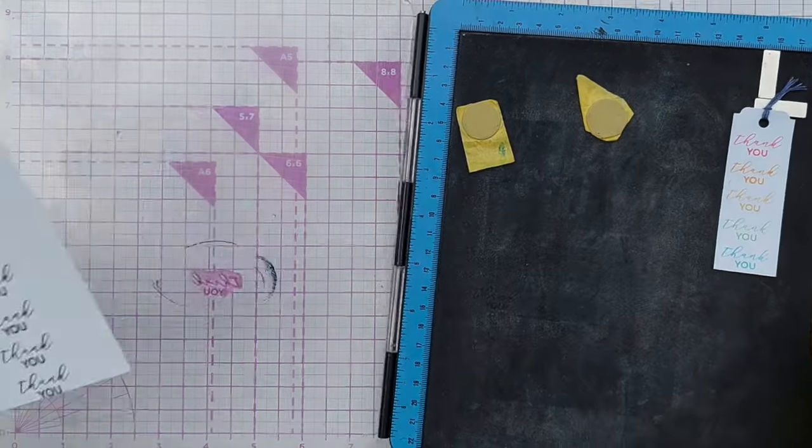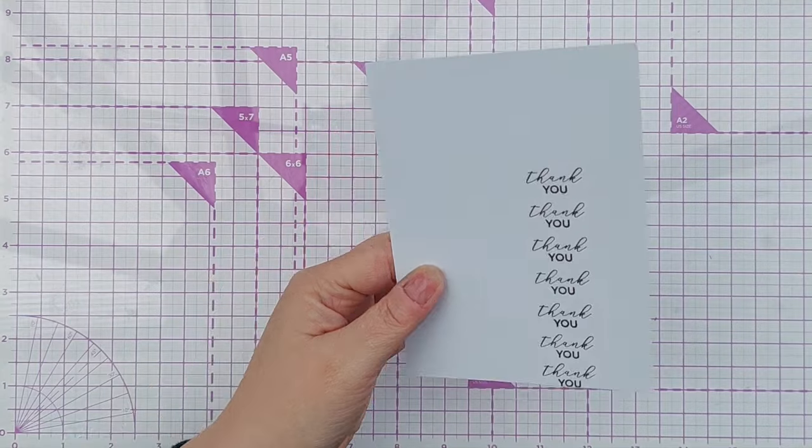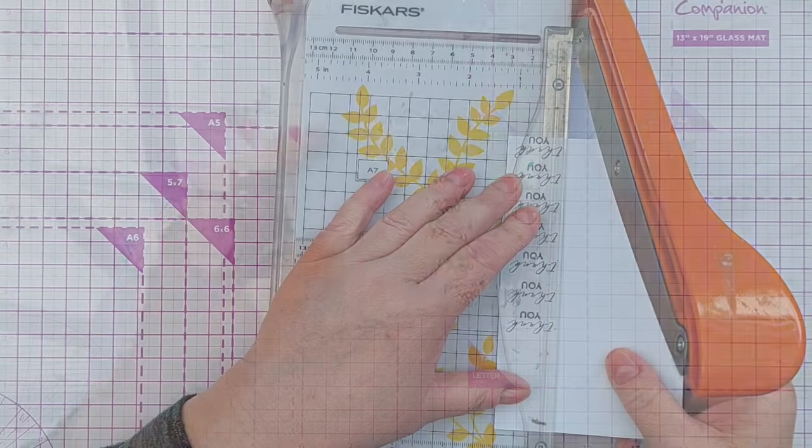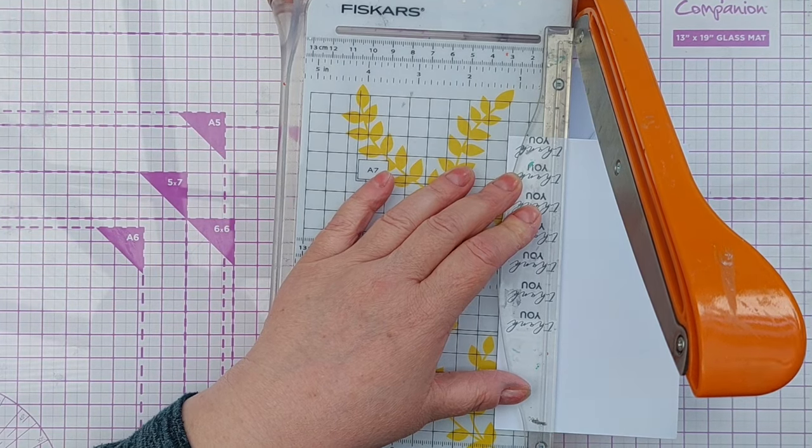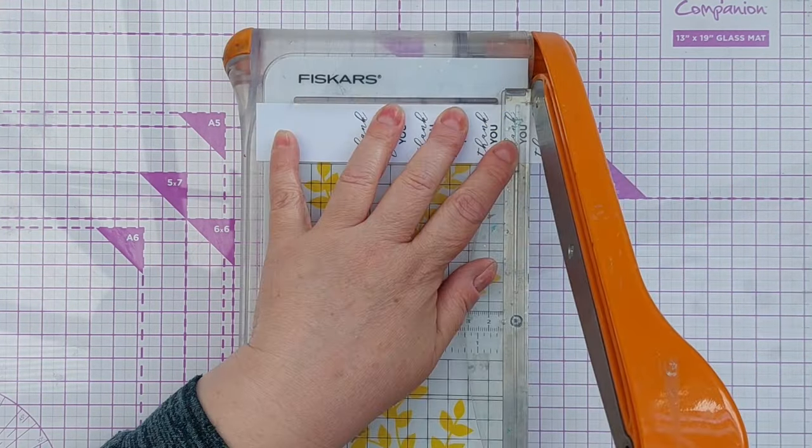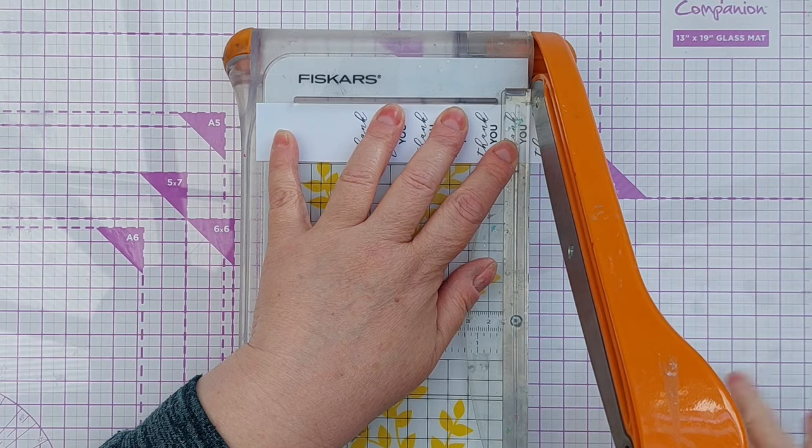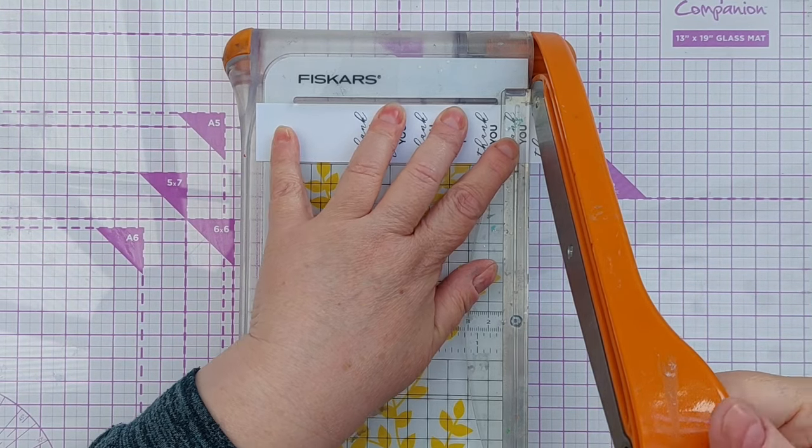So there we've got a nice little stack of thank yous. As I say, I'm cutting this down to three centimeters just because that works with the particular die that I used today. I'm chopping the bottom one off because that was just to help me get everything lined up straight.